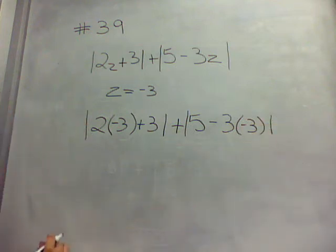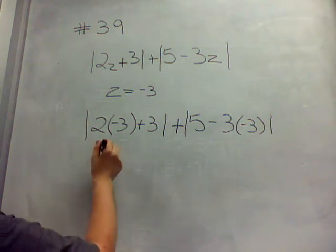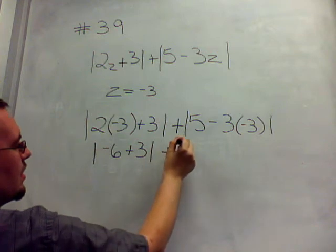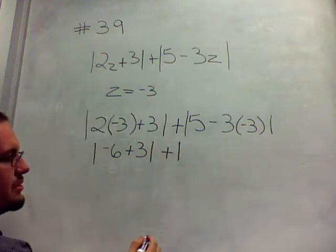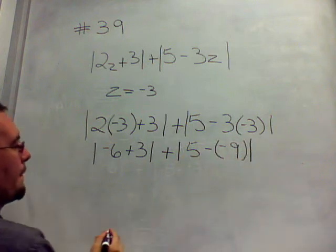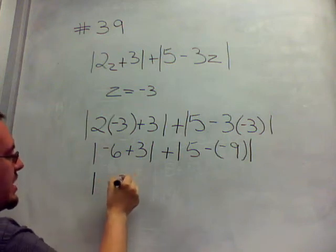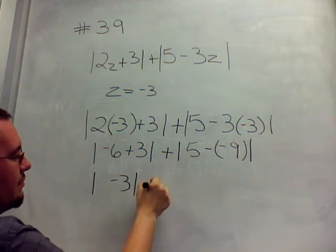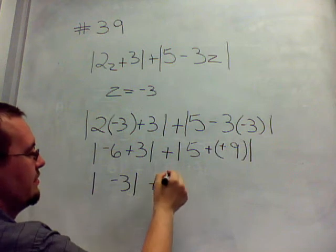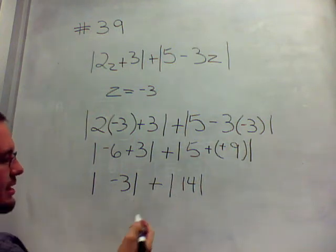We're going to look inside each one of these absolute values. Multiplication goes first, so we have 2 times negative 3, which is negative 6, plus 3. Over here, multiplication goes first, so we have 5 minus negative 9. Negative 6 plus 3 equals negative 3. So the absolute value of negative 3, plus 5 minus a negative 9. We can change that to 5 plus a positive 9. 5 plus 9 is 14.